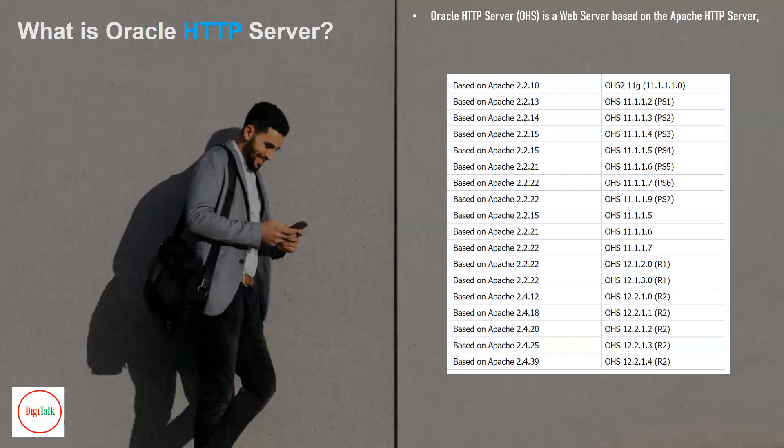From Oracle, there are many versions of OHS. Earlier it was 11g, and inside 11g there are many versions starting from 11.1.1.0 to 11.1.1.2, 11.1.1.3. As of now, the current version of OHS is 12.2.1.4, which is called 12c R2.